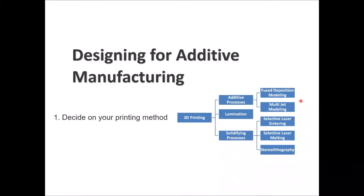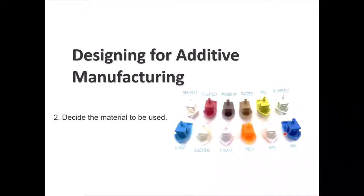The main general rules for designing for additive manufacturing: firstly, you want to decide what printing method you are going to use to make your design a real product. In 3D printing we have additive processes such as FDM and multi-jet modeling, lamination 3D printing, as well as solidifying processes such as selective laser sintering, selective laser melting, and stereolithography. The second step is to decide what kind of material you have in mind for the project.